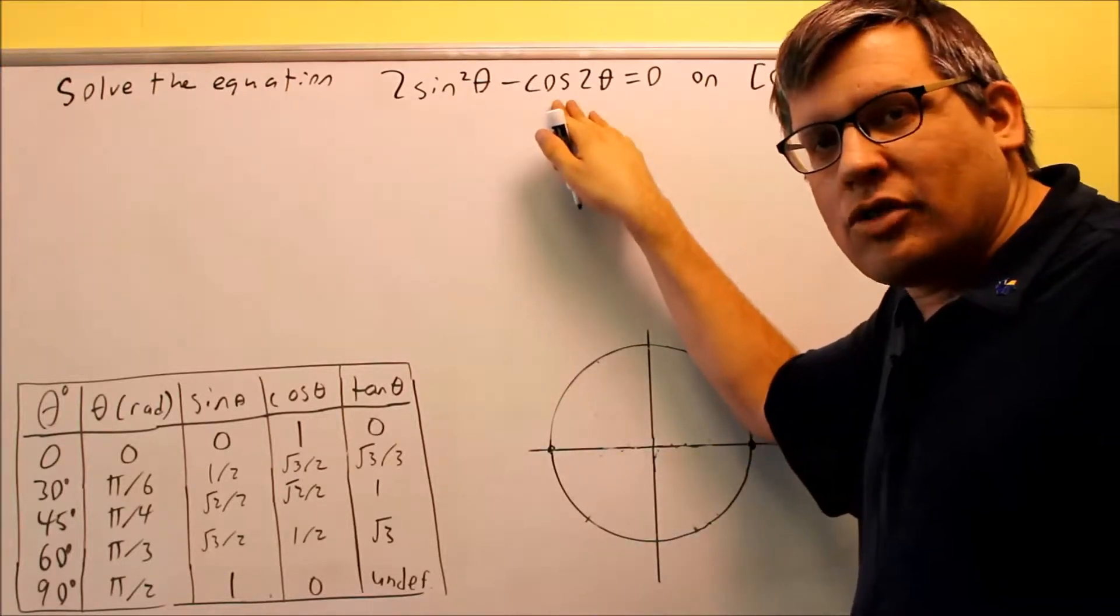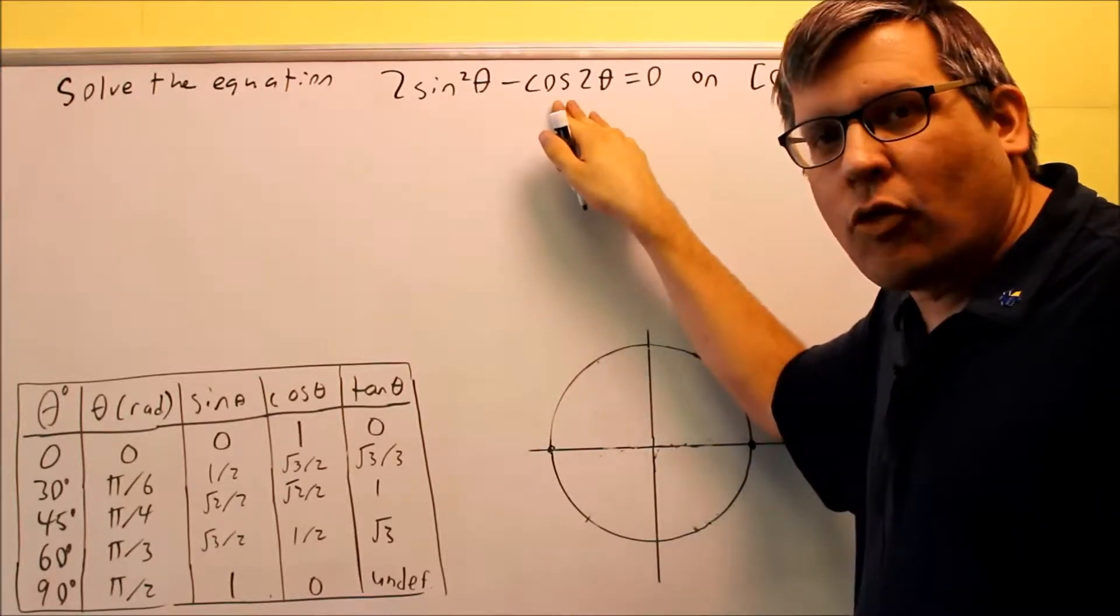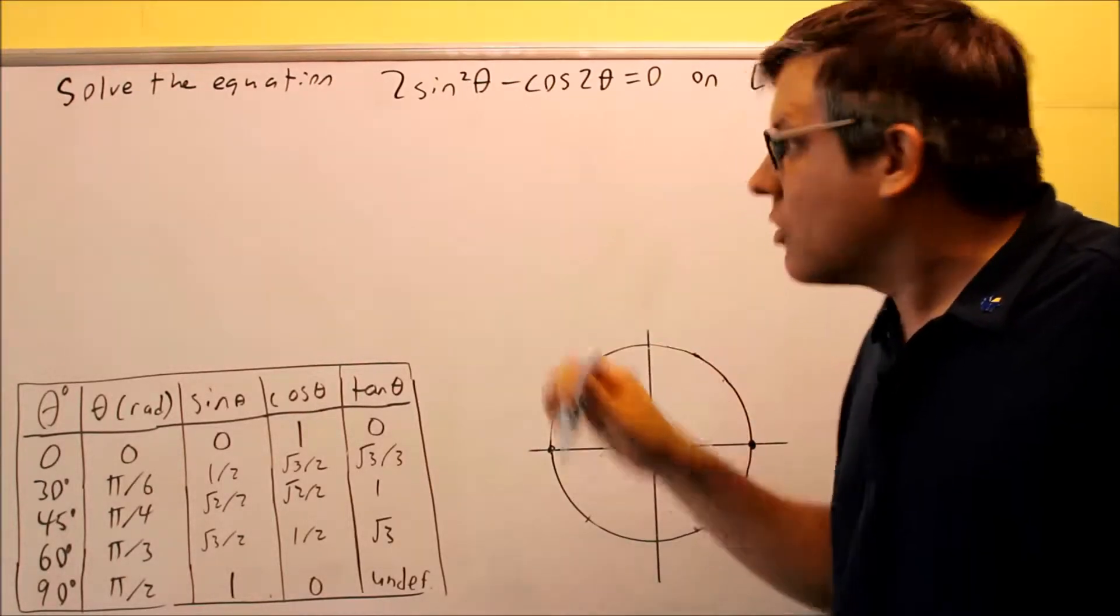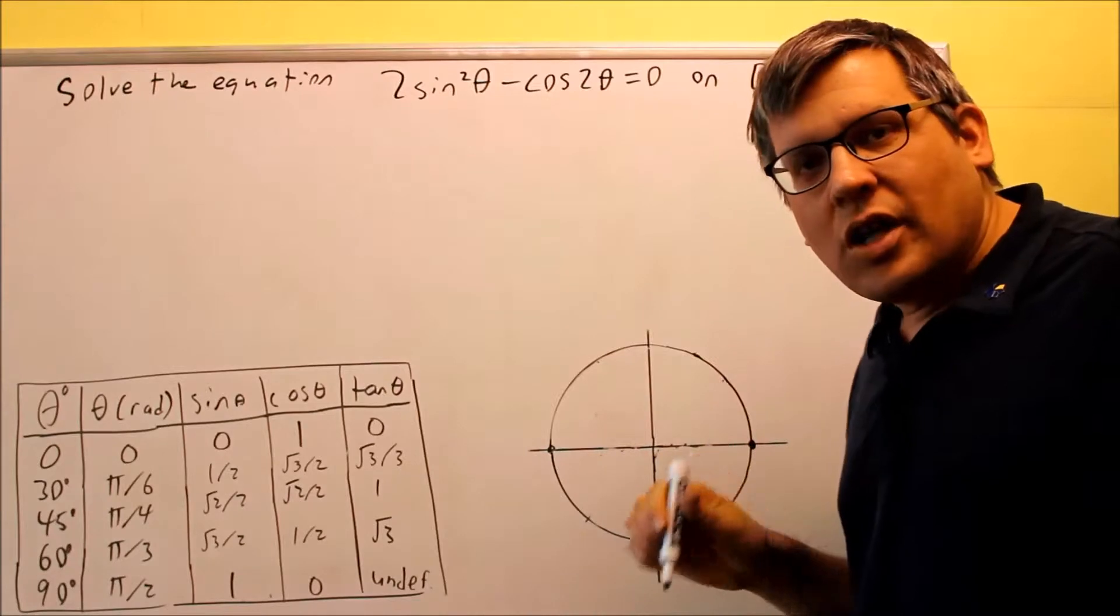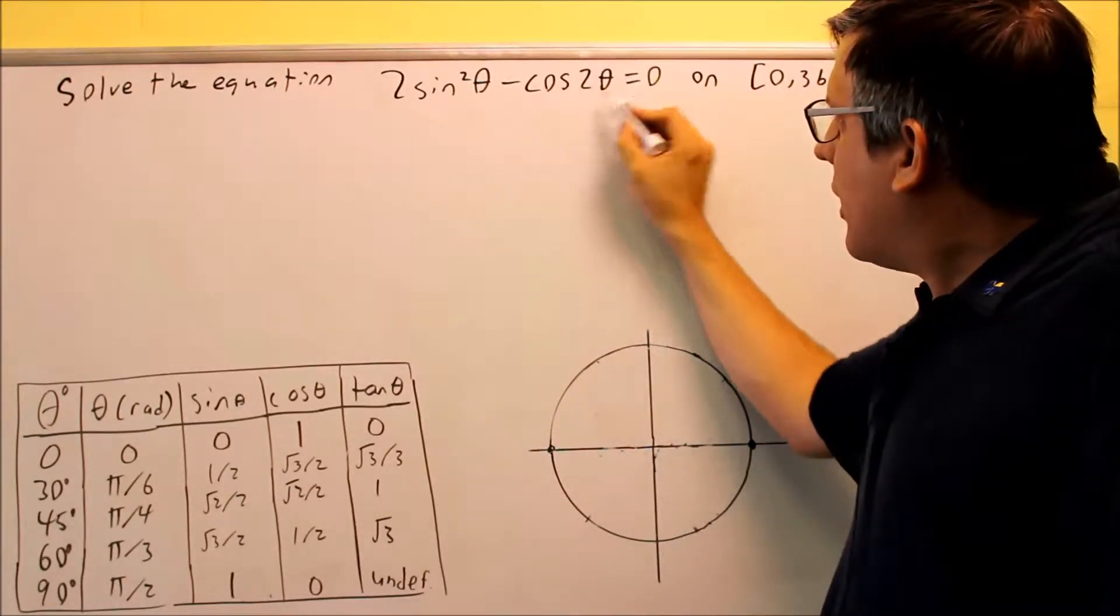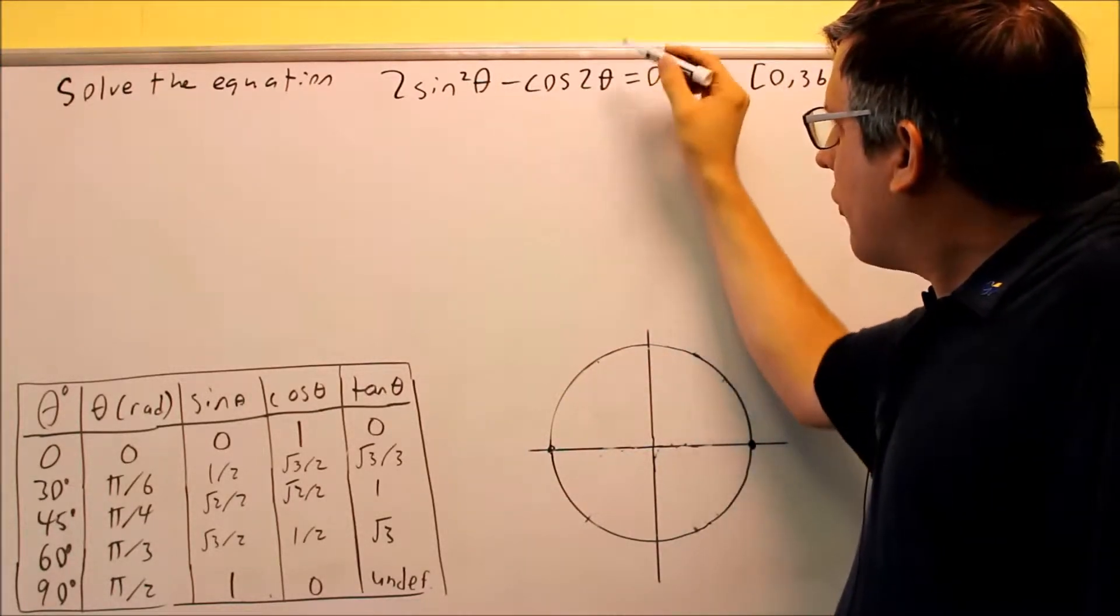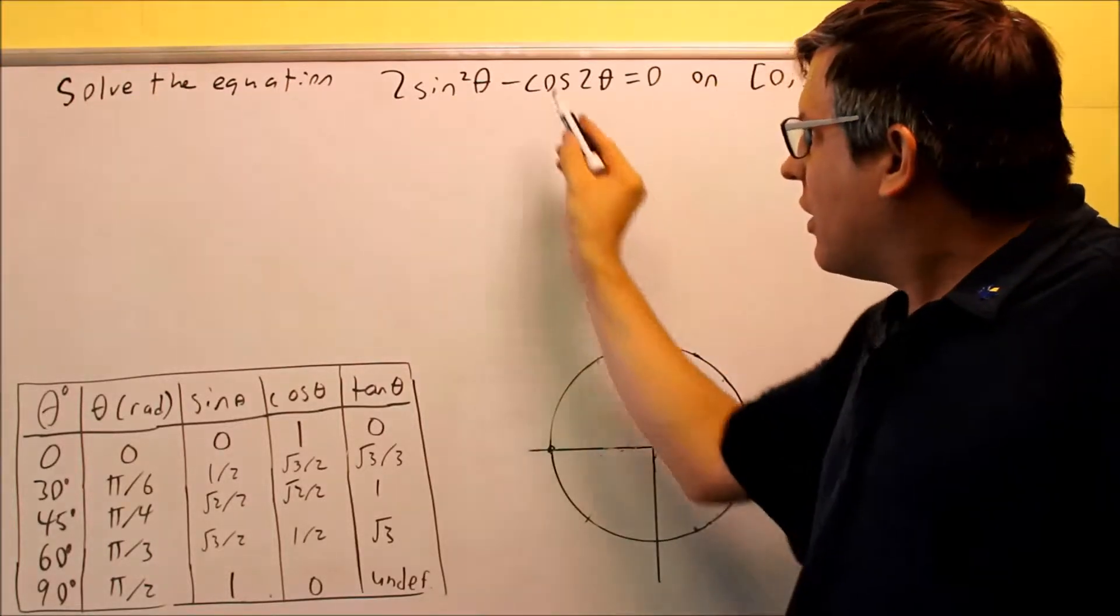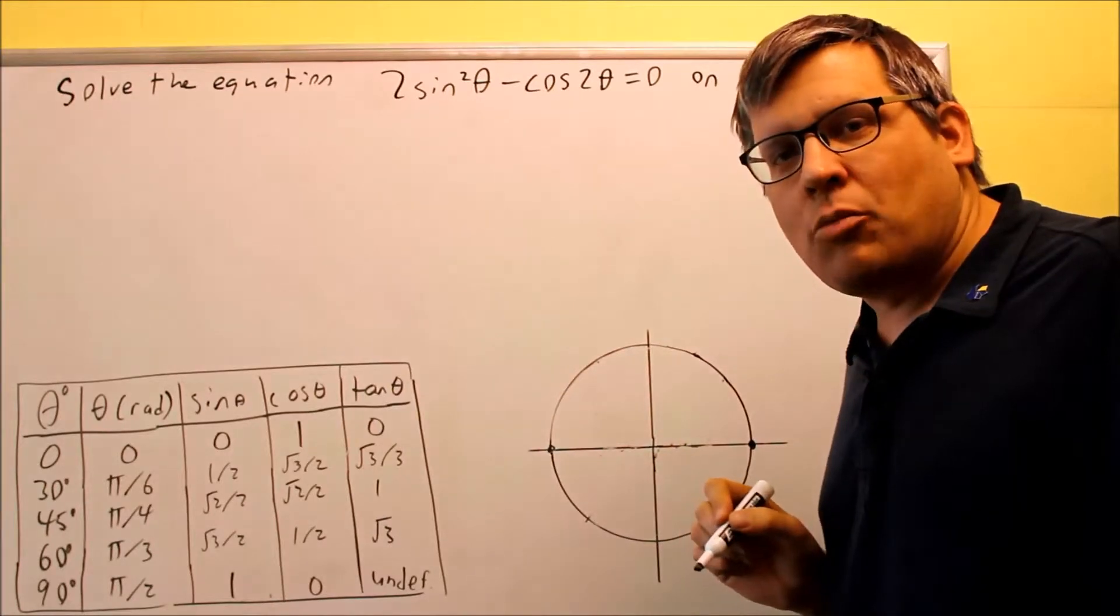We're going to go back to our double angle formulas from a previous session. You want to make sure you have those formulas handy because you may have to use a couple of those when working in this session. We have three different formulas to choose from for cosine 2 theta. We want to pick one that allows us to simplify this down more.